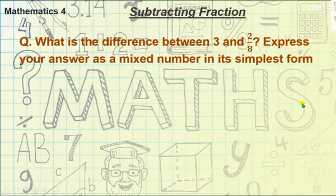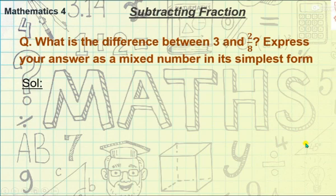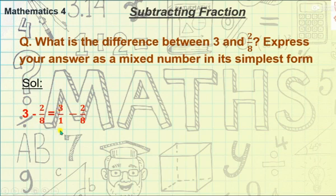We have to find out the difference between 3 and 2/8. As I said, difference means we have to subtract the given fractions. Let's start our solution. Here we have 3 minus 2/8. We can write 3 in the form of 3/1, because 3/1 also gives us 3.